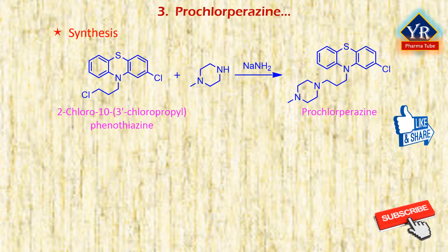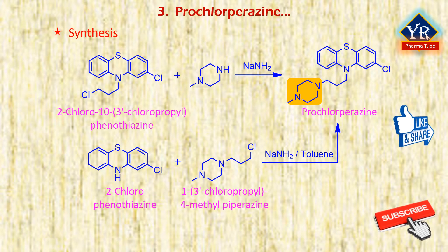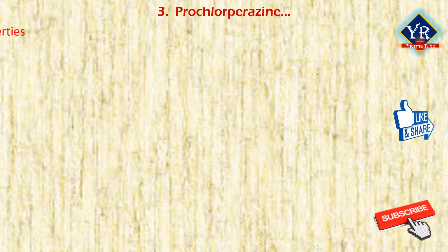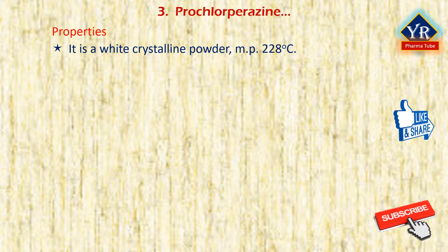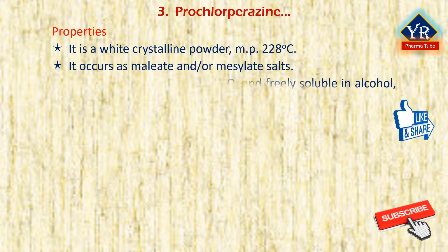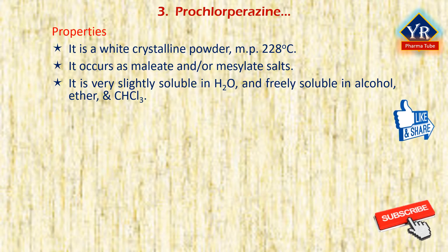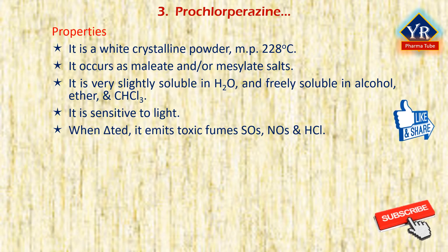Prochlorperazine is synthesized by the condensation of 2-chloro-10-(3-chloropropyl)phenothiazine with 1-methylpiperazine. In an alternative method, it is prepared by refluxing 2-chlorophenothiazine with 1-(3-chloropropyl)-4-methylpiperazine in the presence of sodium amide in toluene solvent. Prochlorperazine is a white or pale yellow crystalline powder with a melting point at 228°C. It occurs as maleate and mesylate salts. It is very slightly soluble in water and freely soluble in alcohol, ether, and chloroform. It is sensitive to light and must be stored in a well-closed light-resistant container. When heated to decomposition, it emits toxic fumes of sulfoxides, nitroxides, and hydrogen chloride.